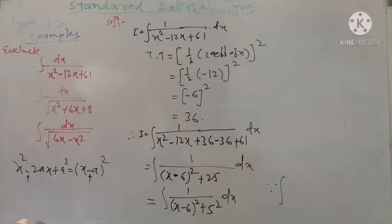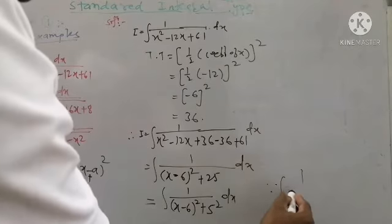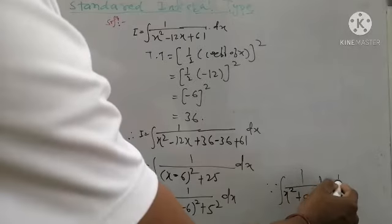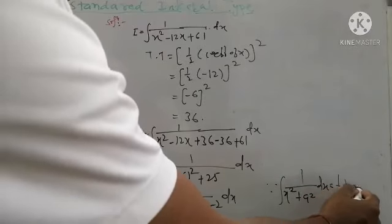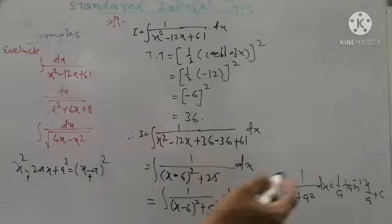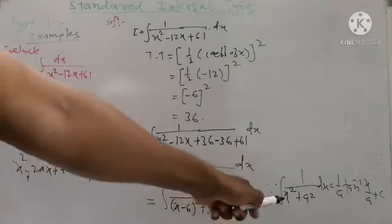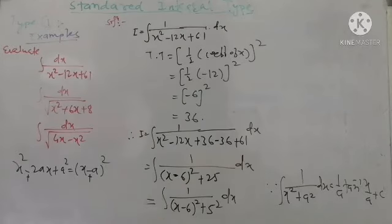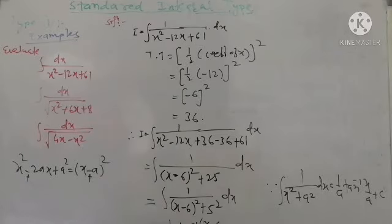The standard form with addition in the denominator is x² + a², whose integration is (1/a) tan⁻¹(x/a) + c. Here a = 5 and x is replaced by (x - 6). So the integration is (1/5) tan⁻¹((x - 6)/5) + c. This is our answer.